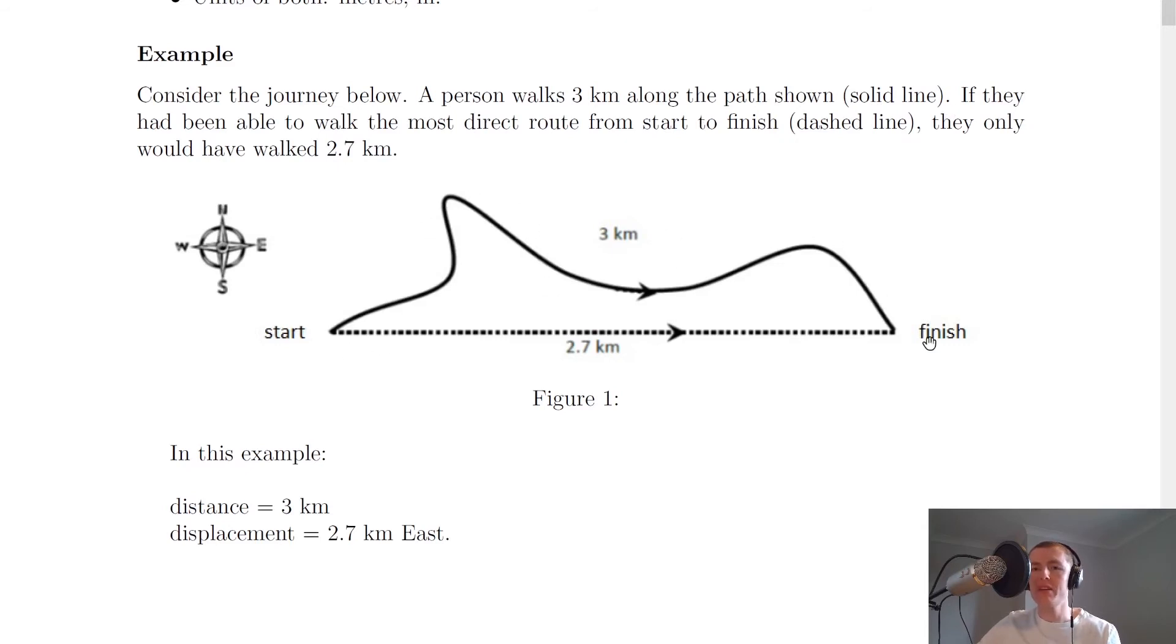If they had been able to walk the most direct route from start to finish, this dashed line, then they only would have walked 2.7 km. So in this example, our distance is the 3 km because that's how far they traveled in total regardless of the direction.